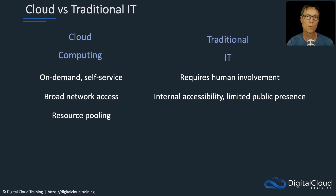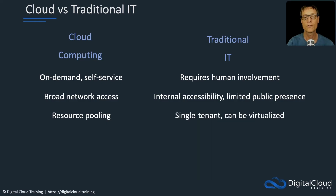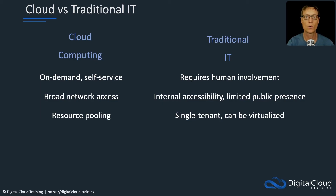With cloud computing we have resource pooling, meaning large amounts of capacity are put together and pooled so they can be offered to different customers who share that underlying infrastructure. With traditional IT, it's typically single tenant — your organization owns the infrastructure and uses it. Sometimes it can be multi-tenant if you have different departments and implement a private cloud, which we'll talk about later in this section, but for the most part it's going to be a single set of infrastructure for your company.